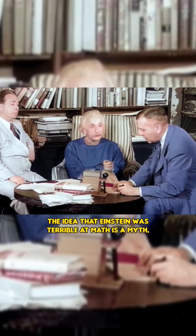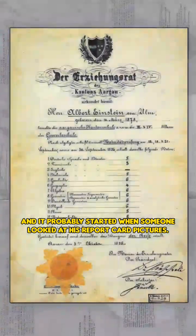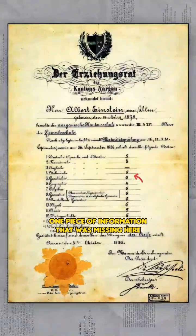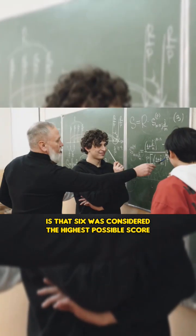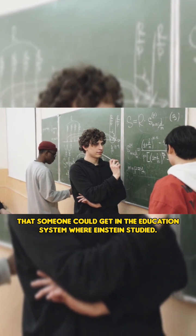The idea that Einstein was terrible at math is a myth, and it probably started when someone looked at his report card pictures, seeing that the highest grade was a 6. One piece of information that was missing here is that 6 was considered the highest possible score that someone could get in the education system where Einstein studied.